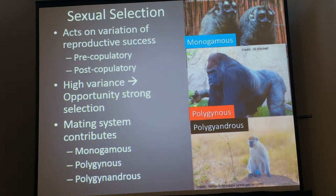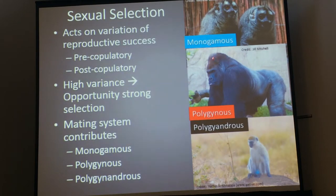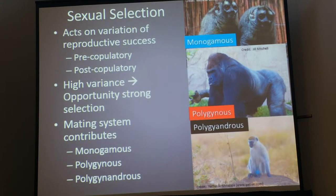Gorillas are an example of a polygynous species, shown in red. The males are able to hoard a lot of females and prevent other males from getting to them, so they have a lot of pre-copulatory selection, which usually occurs as sexual dimorphism with males taking on large exaggerated traits. The vervet monkey down here is an example of a polygyneandrous system — multi-male, multi-female — so males devote their resources to large testes sizes.